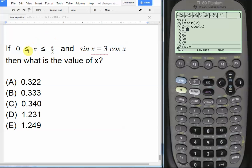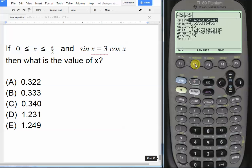They tell us that the angle x is between 0 and π/2, meaning between 0 and 90 degrees. Let's make sure that our window, if we hit diamond F2, the x min is 0 and the x max of our domain is π/2.